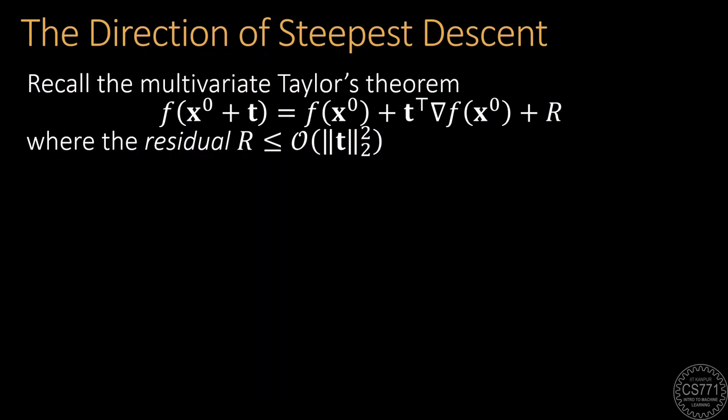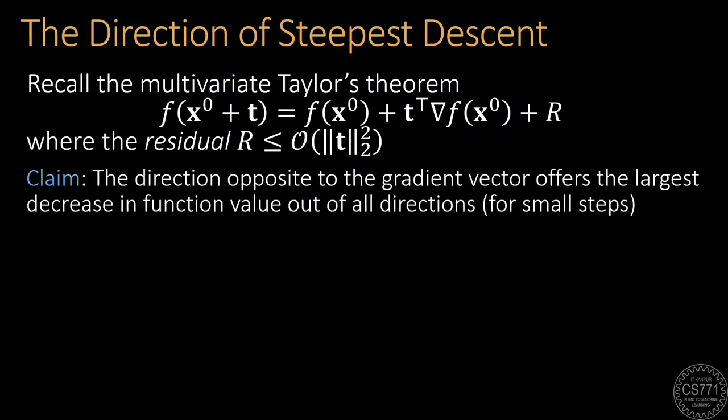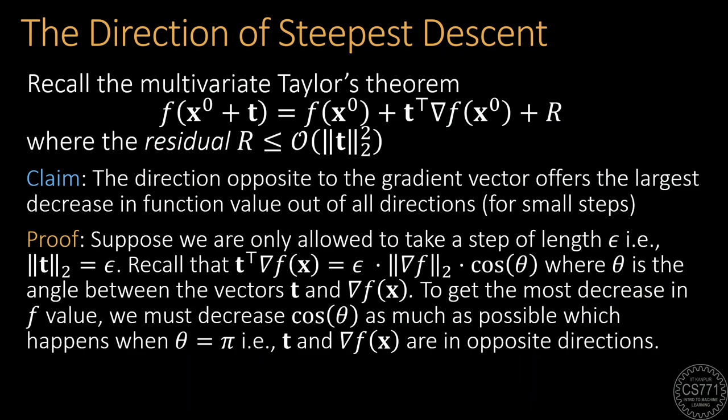To get hold of the steepest descent direction, let us invoke Taylor's theorem for multivariate functions that we have seen in earlier discussions. Taylor's theorem tells us that for nice functions, if we move along a vector t from a point x0, the function value changes roughly according to the dot product of the vector t and the gradient of the function at the point x0. There is a correction or residual term here, which we are denoting by R, but that can be neglected if we don't move too much, which means if the vector t has small enough Euclidean length. Given this, a proof involving very simple geometric principles tells us that in order to decrease a function value the most, we must move in the direction opposite to that of the gradient.